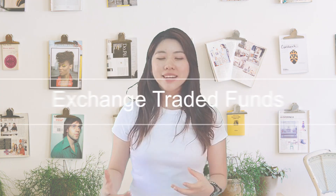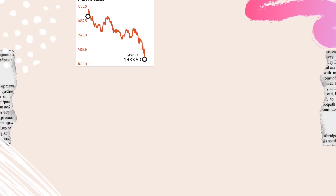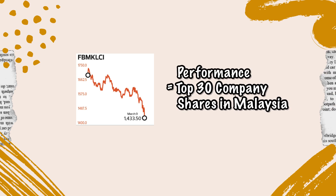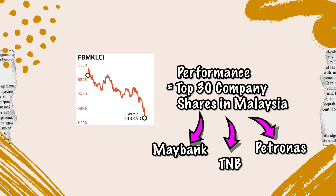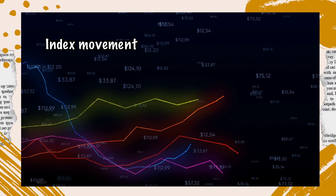So what is ETF? ETF, also known as exchange traded funds, is a type of investment that consists of various stocks, which usually tracks an underlying index. For example, the KLCI index shows the performance of the top 30 companies in Malaysia. This can include Maybank, TNB, Petronas and so on. So the ETF KLCI follows the movements of this index.